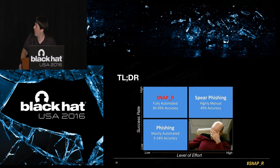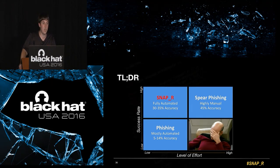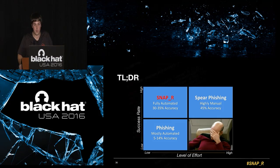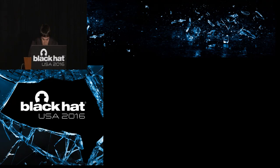As a summary with actual stats: phishing is already mostly automated, but gets between 5 and 14 percent accuracy in the best campaigns. Spear phishing is highly manual — takes around 10 minutes to create a single post because you have to research the target, figure out what they like and what time to post — and still only gets around 40 to 45 percent accuracy in the best campaigns. In our multiple tests, Snapper is fully automated — just click a button — and gets between 30 and 35 percent of people clicking through the link. With that, we'll go ahead and pray to the demo gods and hope it actually works.